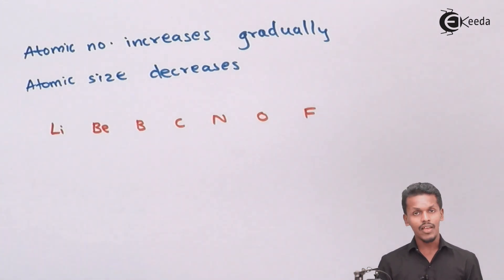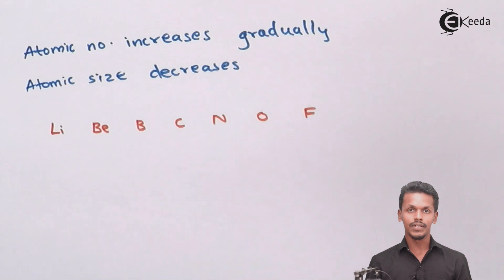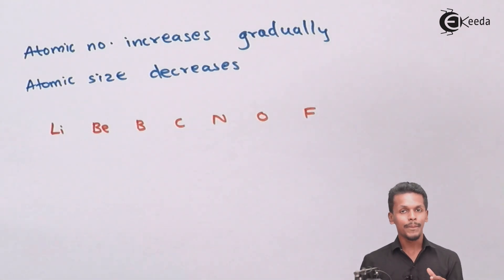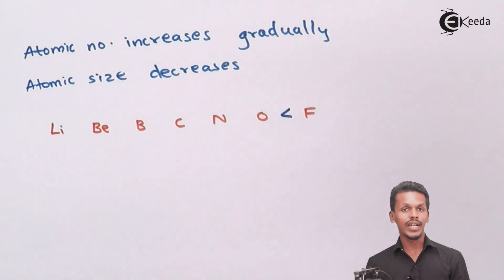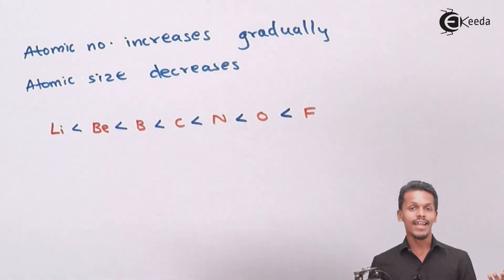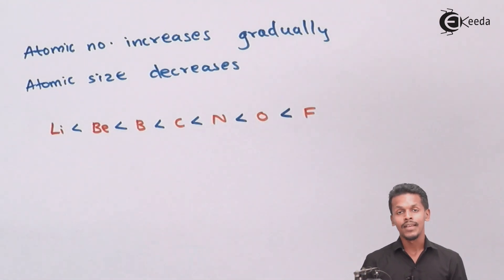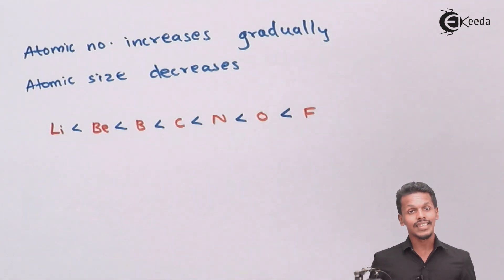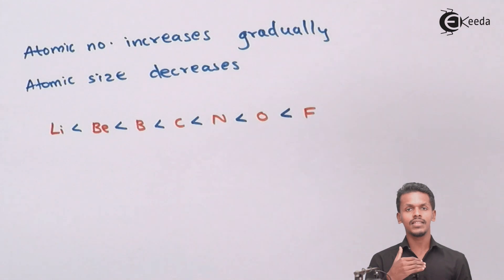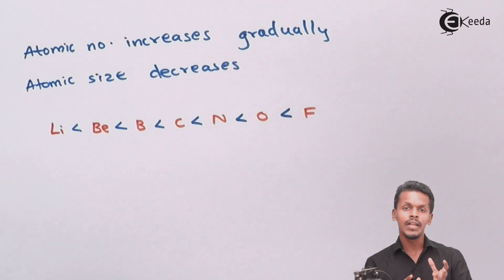So the electronegativity sequence shows that fluorine will be the most electronegative element in the period — more than oxygen, nitrogen, carbon, boron, beryllium, and lithium. This makes fluorine the most electronegative element in the whole period, and this general variation is seen in every period of the periodic table.